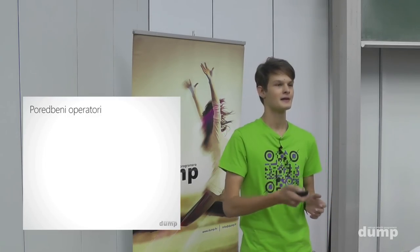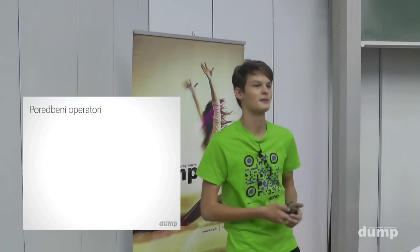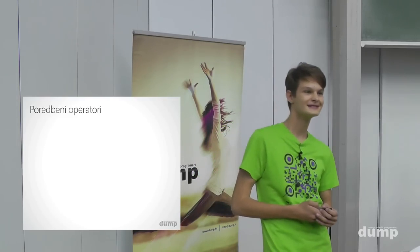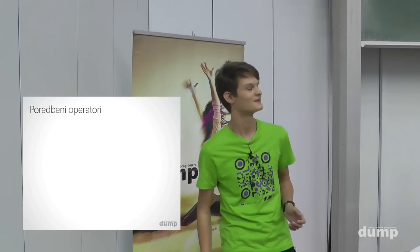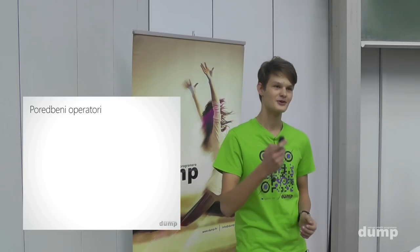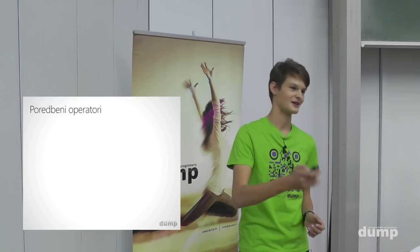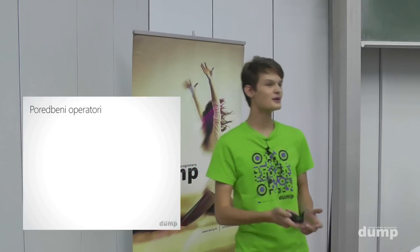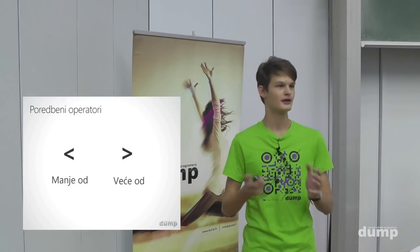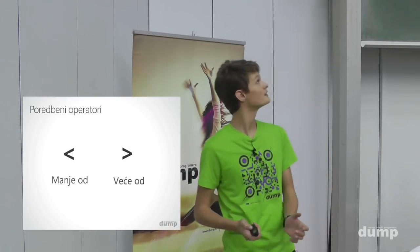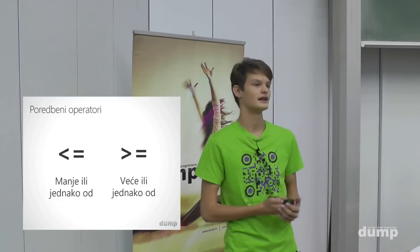To nisu logički, sad pričamo o poredbenim operatorima. Imamo: manje od, veće od, manje ili jednako, veće ili jednako, jednako jednako i različito od.